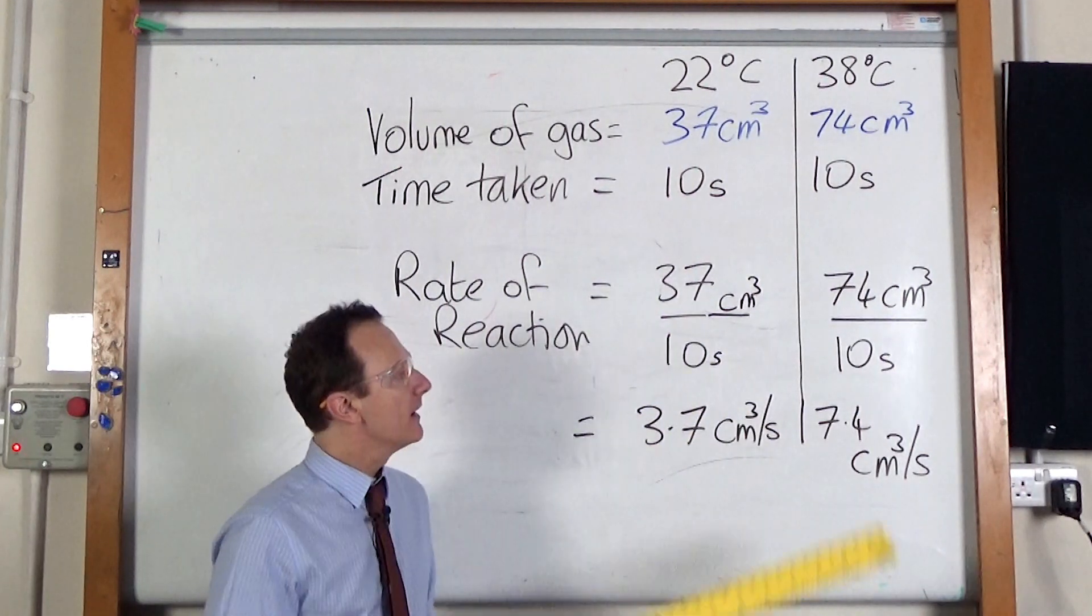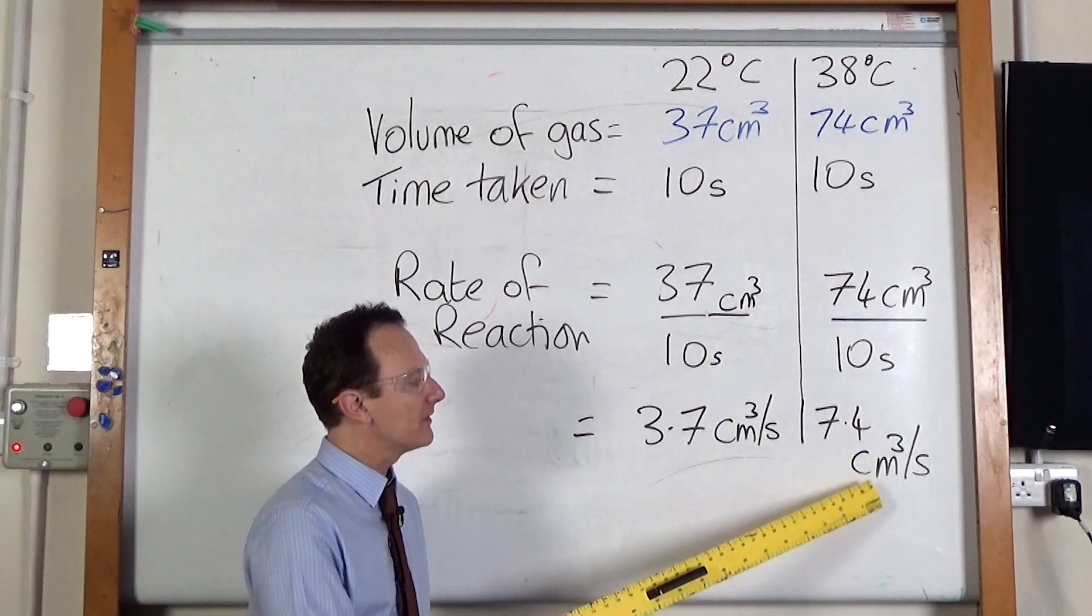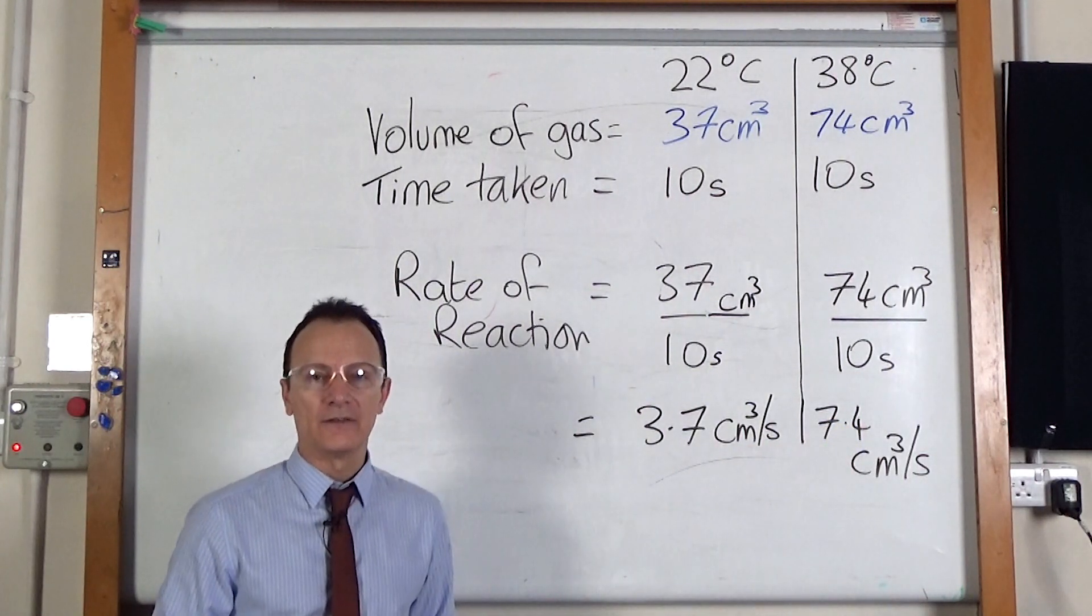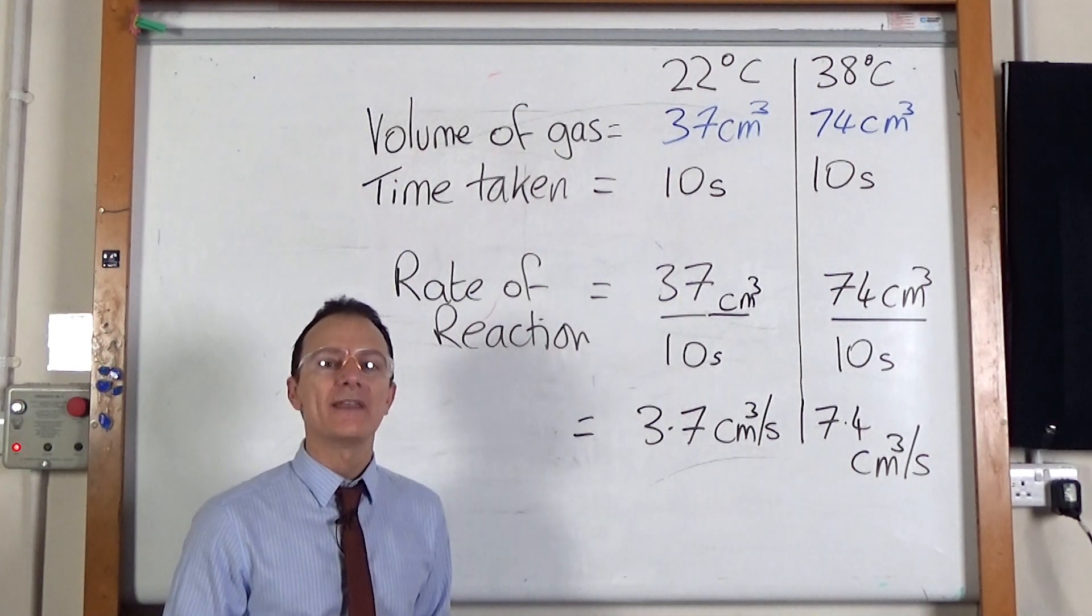At the higher temperature, it's going to be 74 divided by 10, which is 7.4 centimeters cubed per second. So we can now see how much faster the reaction was going at the higher temperature.